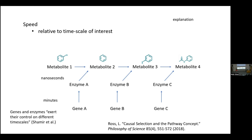One rationale for selecting causes that are more explanatory than others is that they operate within a timescale of interest. In many cases, slow causes get dropped out of the picture because they're not even operating within this timescale. In many cases, the timescale is baked into the explanatory target — or it should be. If a scientist is specifying an explanatory target, the timescale should be made explicit.